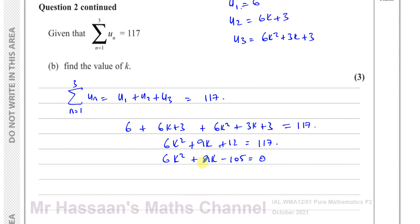I can see that all of these numbers are divisible by 3, so I'm going to divide them by 3 to make life easier. 2K squared plus 3K minus 35 equals 0.